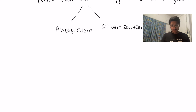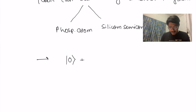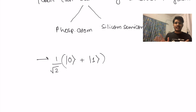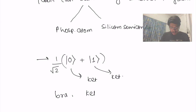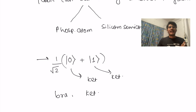The qubit stores different kinds of information, and storing a combination of 0 and 1 at the same time is called superposition. Superposition is represented as a combination of 0 and 1 with some probability. These notations are called ket notation. There are two types: bra notation and ket notation — these are Dirac bra and ket notations, which we'll learn about in later videos.